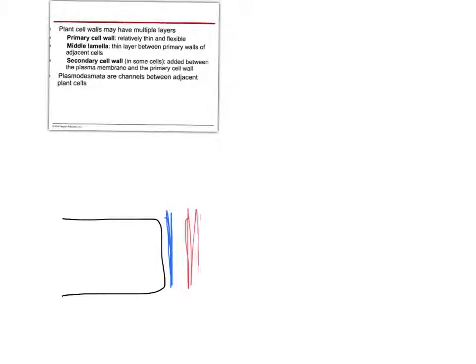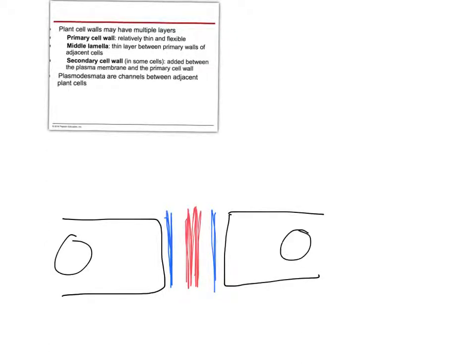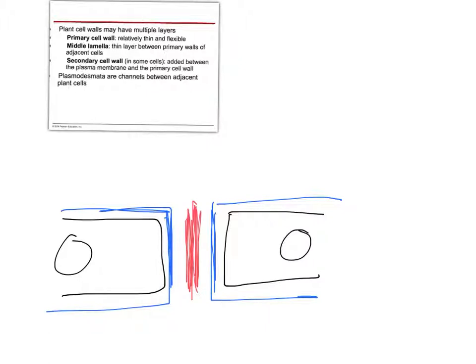If we were to draw it out, here's one cell with its plasma membrane, a primary cell wall that's relatively thin, then your middle lamella between adjacent cell walls, and then another plasma membrane on the other side. The primary cell wall is in blue and is relatively thin. The middle lamella is the thicker layer. A secondary cell wall is not present in all cells, but it would be positioned between the plasma membrane and the primary wall.